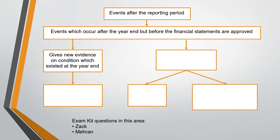Number one: whether the event gives new evidence on a condition which existed at the year-end. If there is a condition that existed at the year-end, you must adjust the financial statements — it is an adjusting event. There are two types of events: one is adjusting and one is non-adjusting. This first one is an adjusting event.